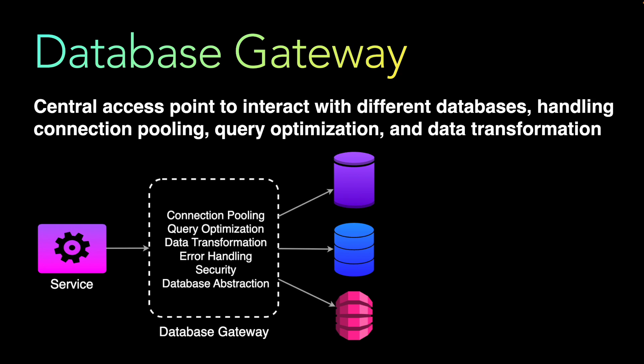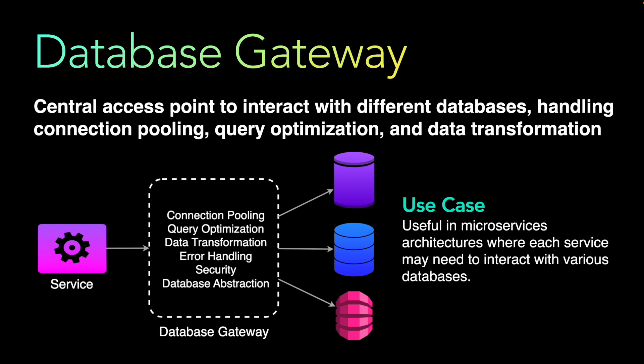Database abstraction allows applications that connect to different types of databases — such as document databases, time series databases, or graph databases — to interact with the gateway through a standardized interface or contract. This abstracts the specific details of each database system. The database gateway is primarily used in microservice architectures where each service may need to interact with various databases.